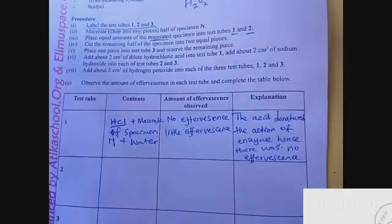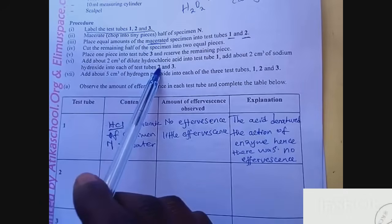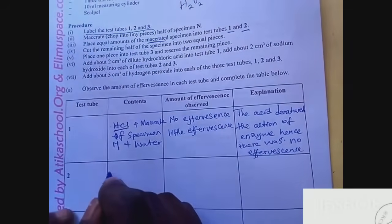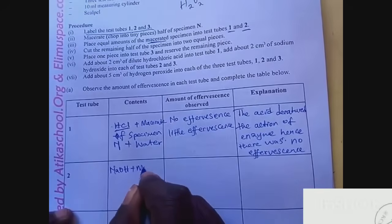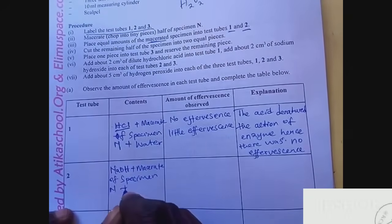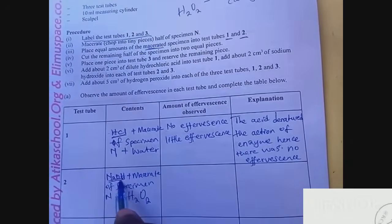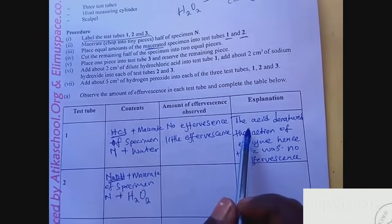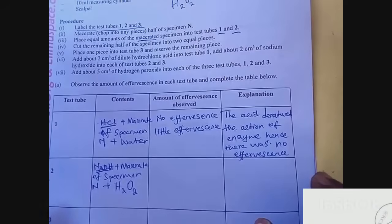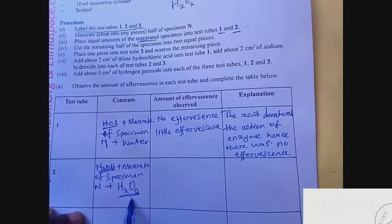Let's go to test tube two. The content: you are told in test tube two you add sodium hydroxide and then hydrogen peroxide plus the macerates. So the content is sodium hydroxide plus macerate of specimen N and hydrogen peroxide. Now, when you see the alkaline, the acid denatures the enzyme action, but now the alkaline is suitable for the action of an enzyme.